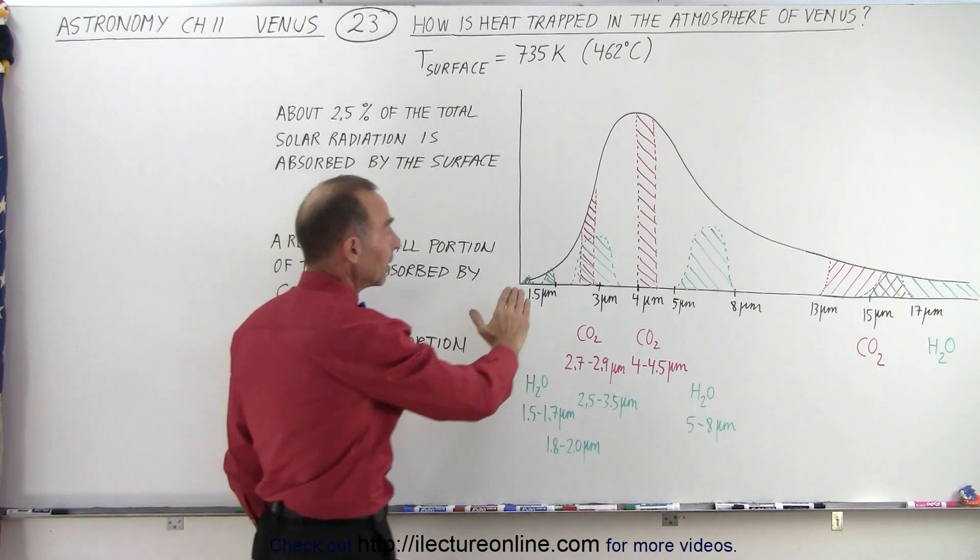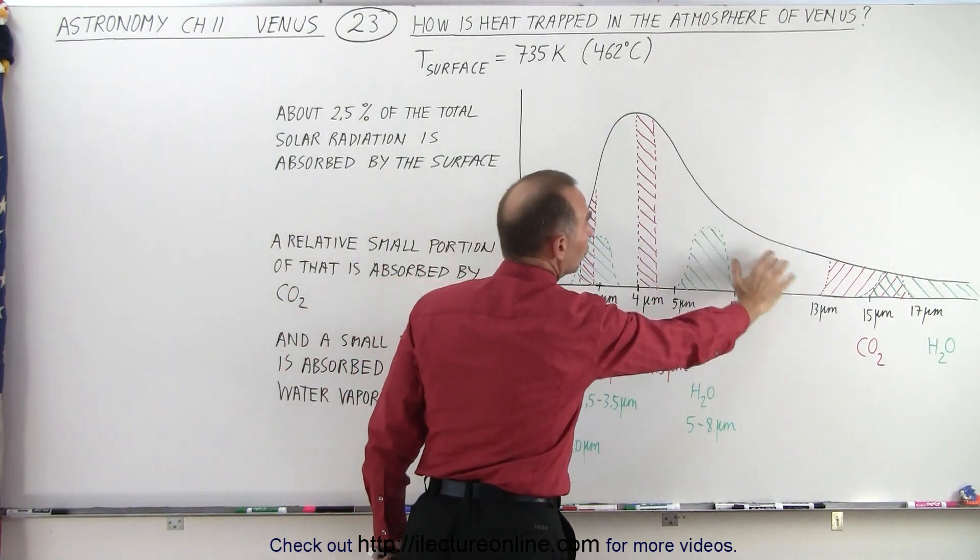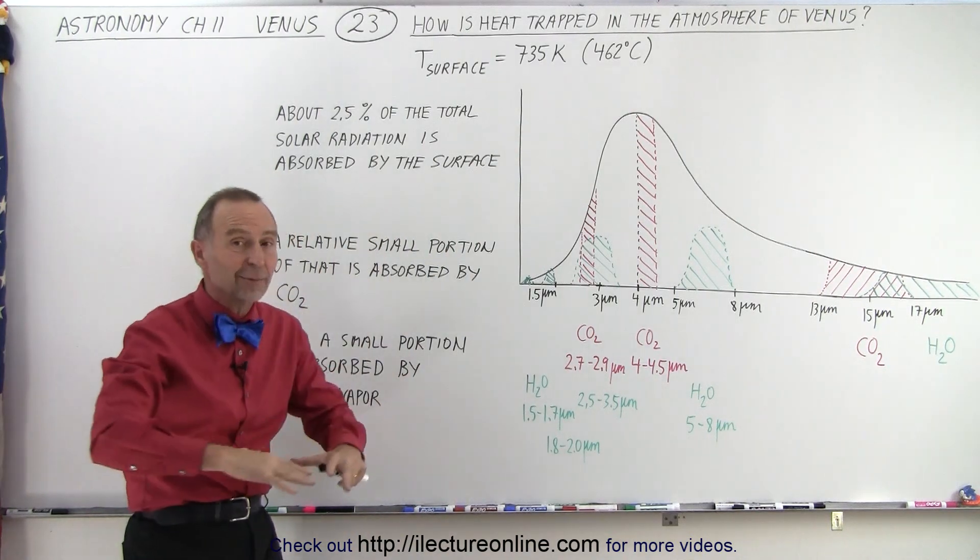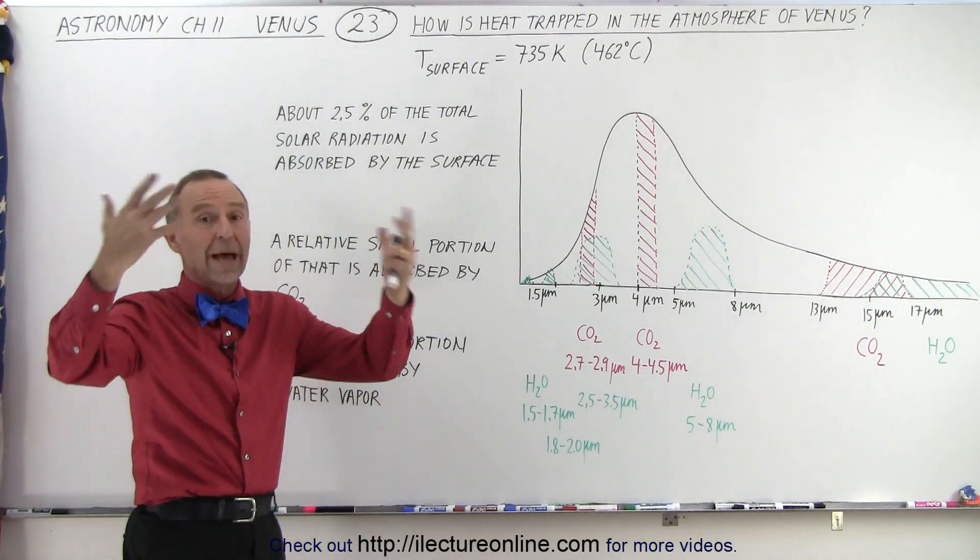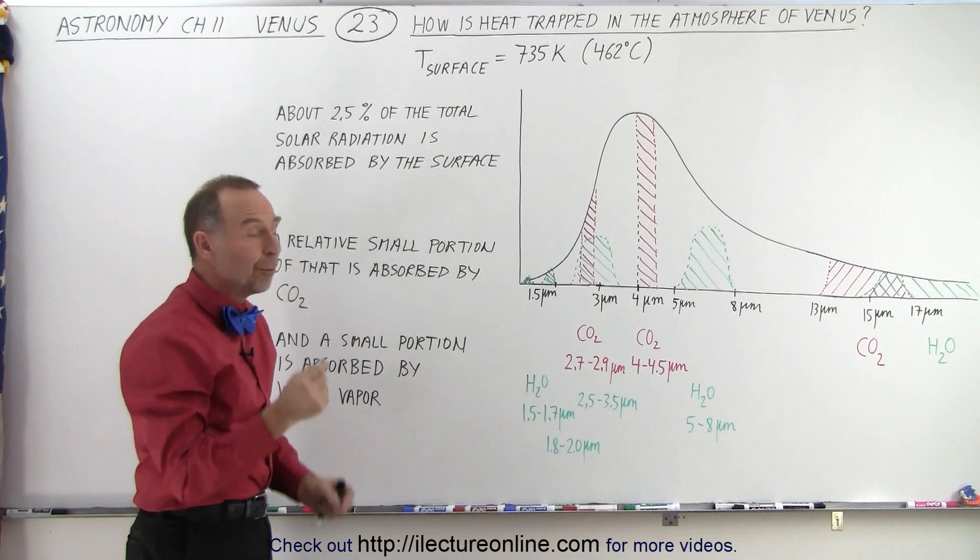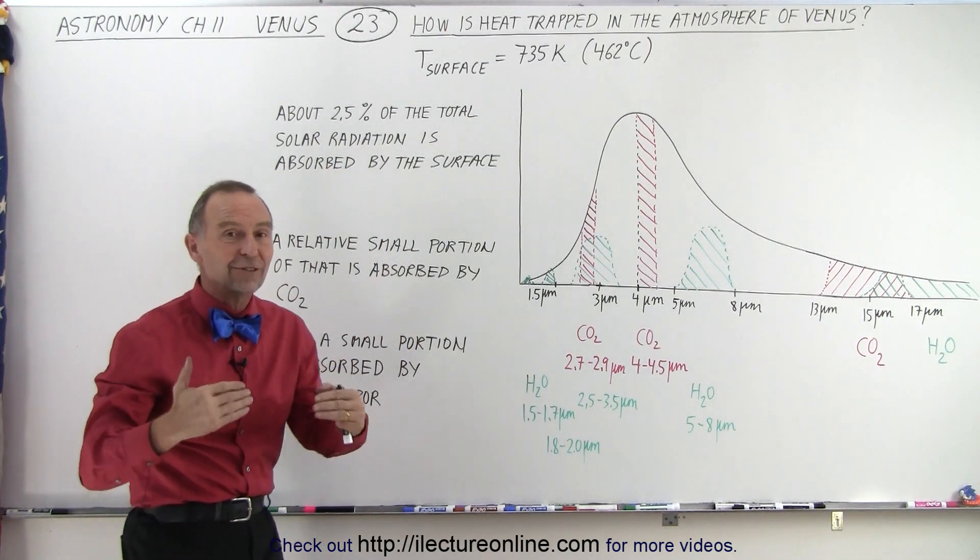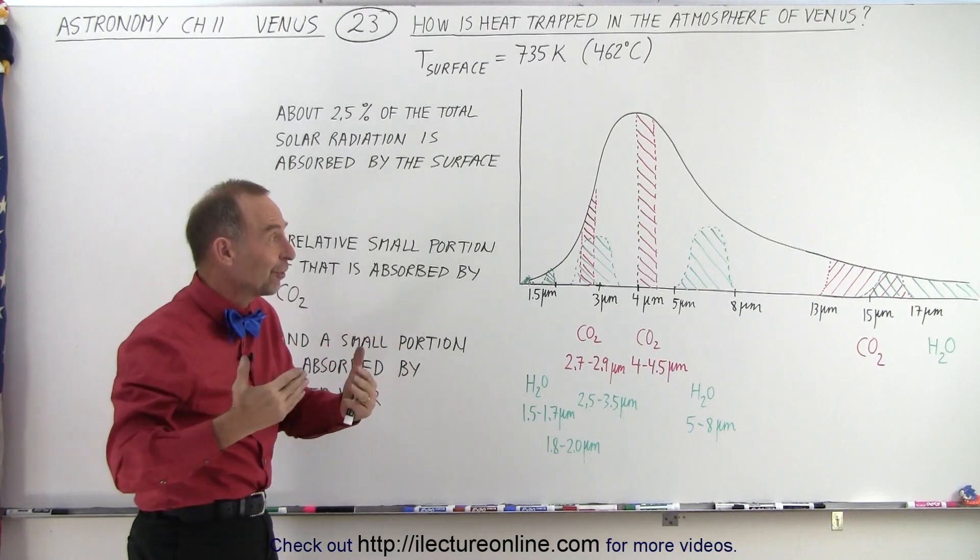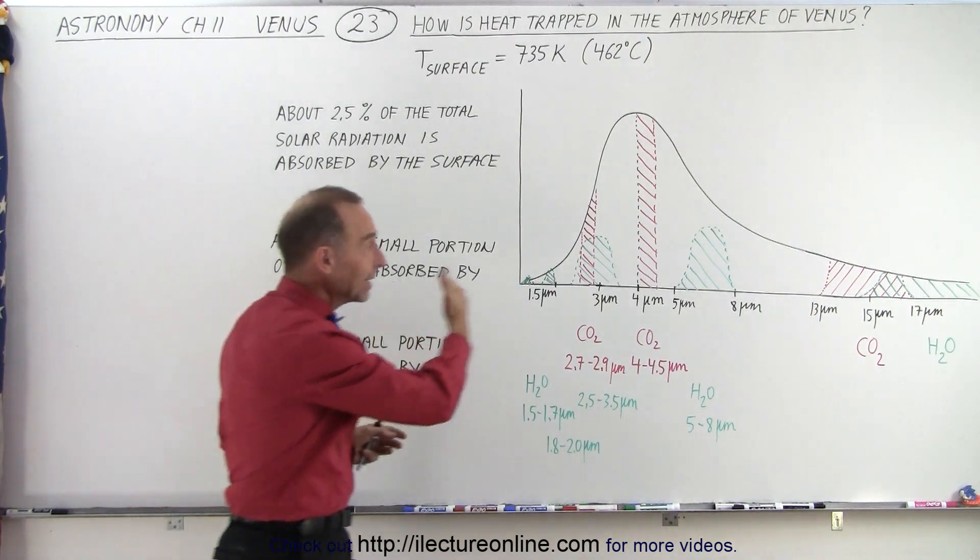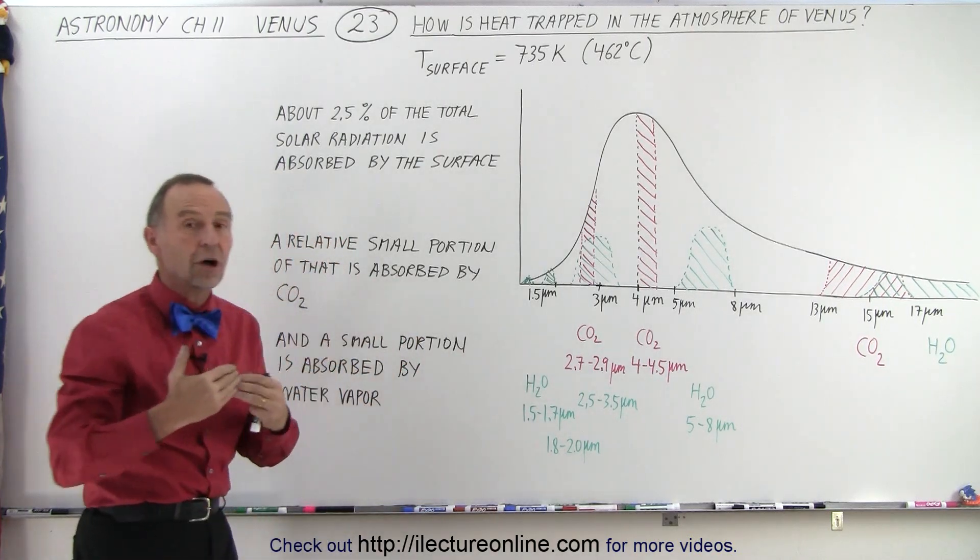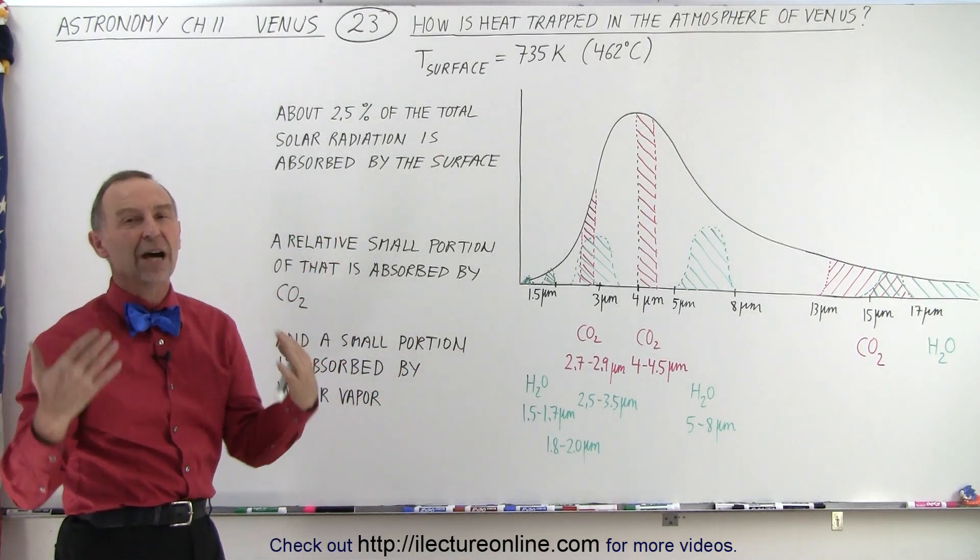Now, you can see there's still a lot of spaces where there's no absorption, which means that a large percentage of that small amount of radiation that comes from the surface of Venus actually makes it back to space unhindered. But it's that small fraction of a small percentage of the radiation that gets emitted by the surface that gets absorbed by the atmosphere, even that small amount, much smaller than on Earth, that causes Venus to get tremendously hot.